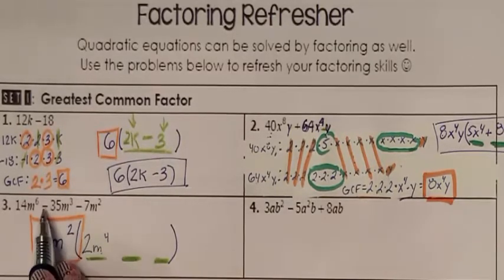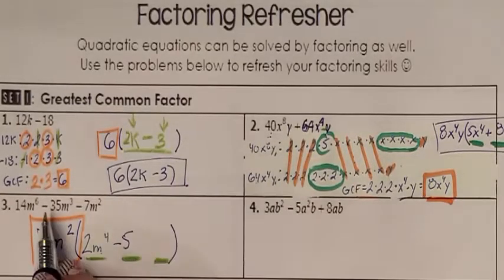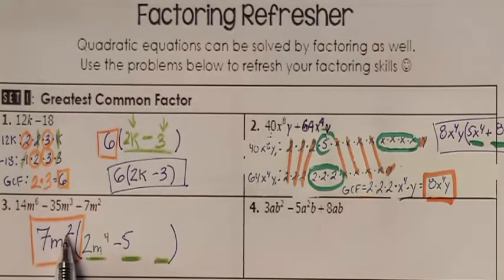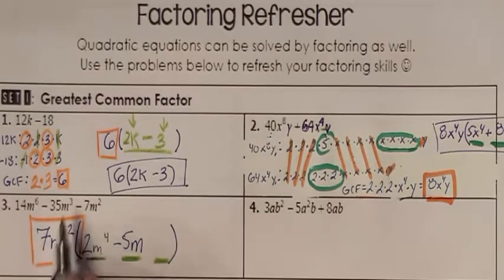7 times what is going to give me the negative 35. 7 times a negative 5 would have given me the negative 35. m squared times what would have given me m to the third. m squared times m would have given me m to the third.